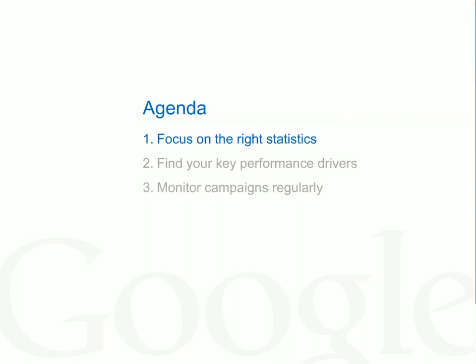Today we'll be covering three main areas. First, a basic review of crucial AdWords statistics and pointers on where to find advanced statistics in your account. Next, we'll cover the reporting tools within campaign management that you can use to focus your attention on the parts of your account that have the biggest impact on your bottom line. Finally, we'll discuss tools you can use to monitor the performance of your account on an ongoing basis, as well as share your AdWords reports with others.